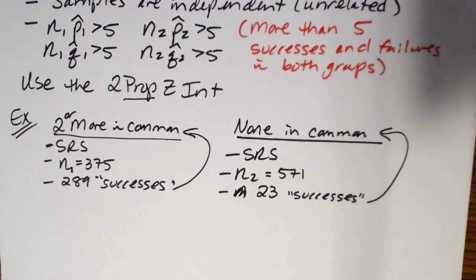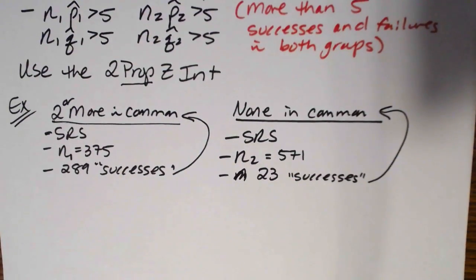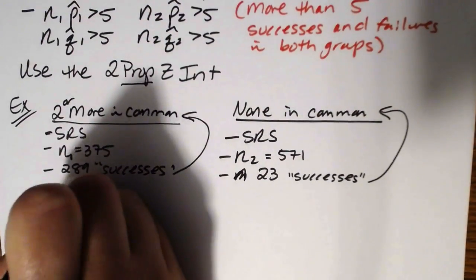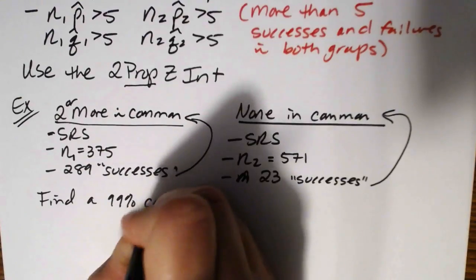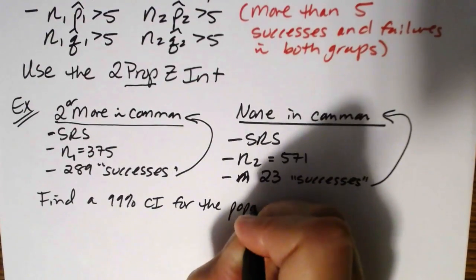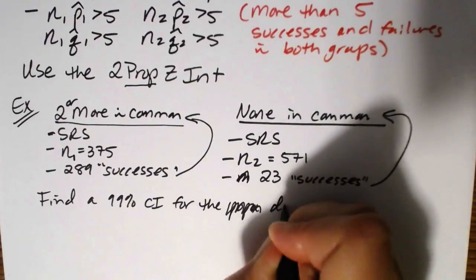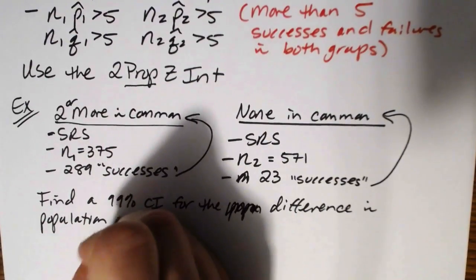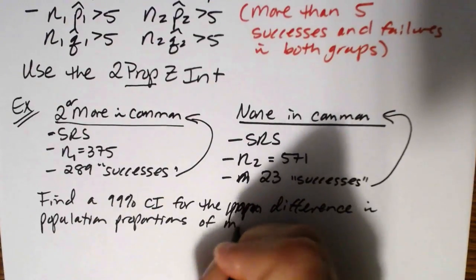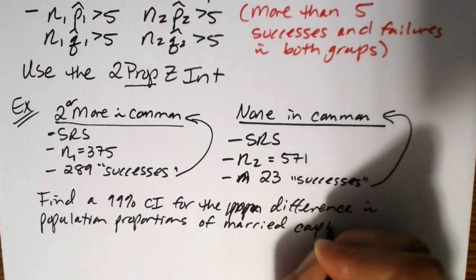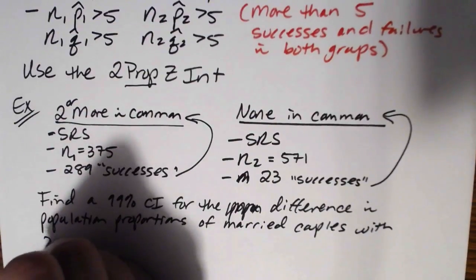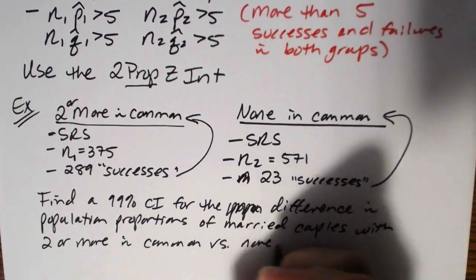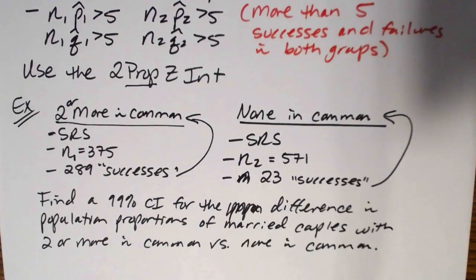So in group one a success counts as two or more preferences in common, and in group two a success counts as none in common. The question asks us to find a 99% confidence interval for the difference in population proportions of married couples with two or more preferences in common versus none in common — we want to compare those rates.